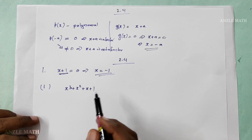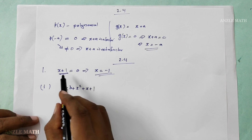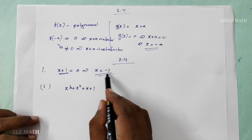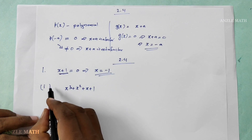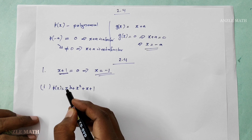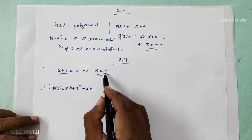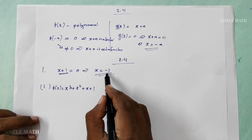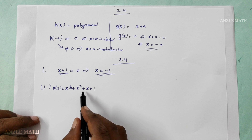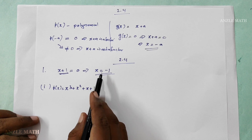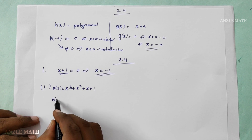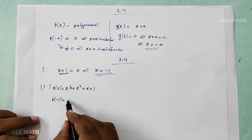We will check one question. We will check the value of x for p of x — it is clear that x will be minus 1. So p of minus 1 is equal to 2.